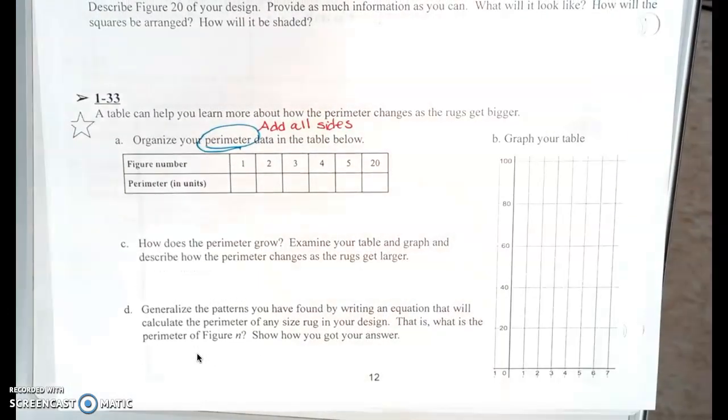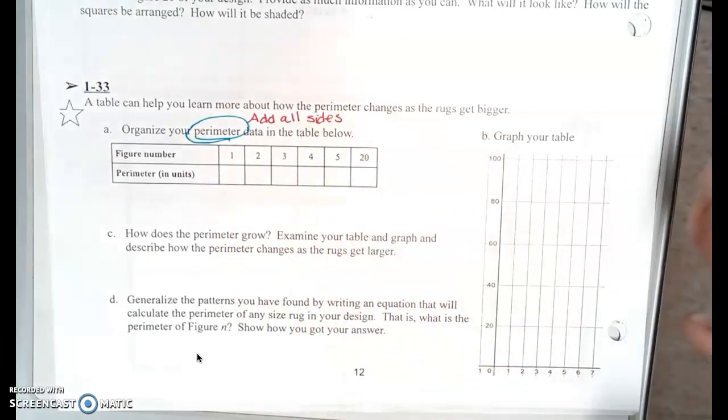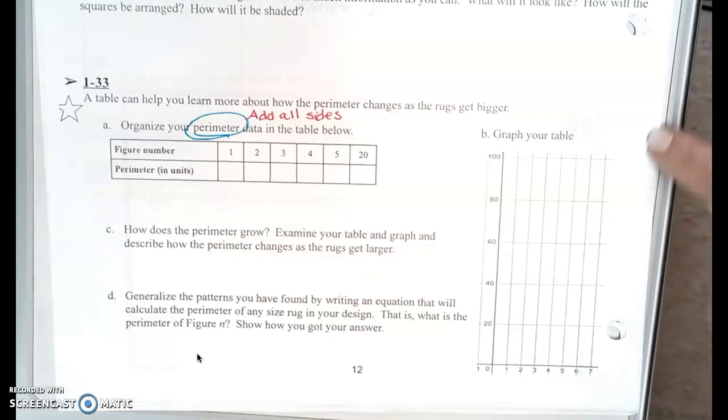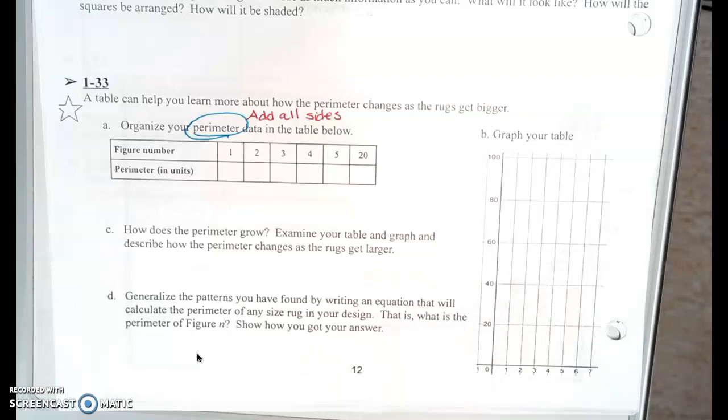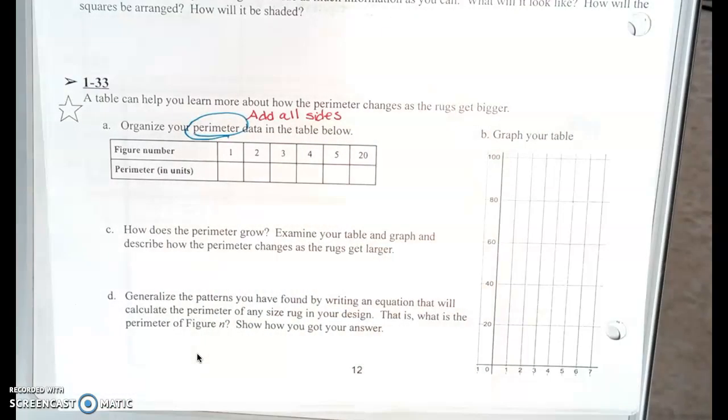Then part B, you're going to graph the 5 points. 20 would be off way over here. So if you want to do 20 like way over to the side and see where it would be, you can. But this stops at 7, so you can kind of estimate where 20 might be over there. Part C, answer the question, how does the perimeter grow? Examine your table and graph and describe how the perimeter changes as the rug gets larger.